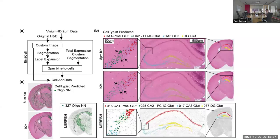This is figure one. Panel A describes the segmentation step and ultimately assigning bins to cells. In the next step, they did a comparison to see how much better bin-to-cell was compared to the standard eight micrometer resolution Visium HD data that 10X recommends.